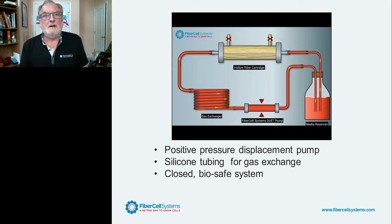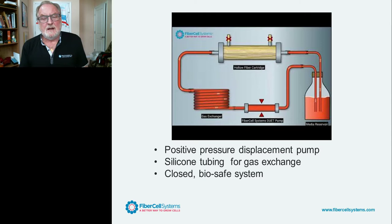Our positive pressure displacement pump is a frictionless pumping system. Pulsatile flow facilitates exchange of nutrients and waste products across the fiber. Cells grow on the outside of the fiber; nutrients and waste can cross, but the product of interest cannot. We can simply harvest it using syringes, pulling out the product on a daily basis.